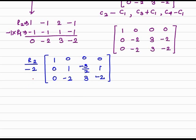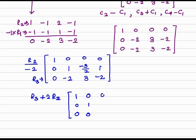The row operation to make the R3 entry zero is: R3 minus its entry, so minus of minus 2 is plus 2, times the leading row R2. By applying this row operation, we get the matrix: 1, 0, 0, 0 / 0, 1, 0, 0 / 0, 0, minus 3/2, 0.